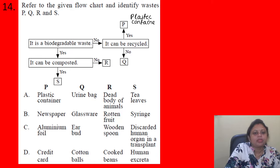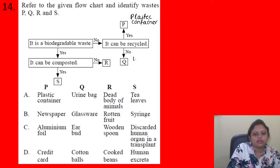P is non-biodegradable and recyclable — could be plastic container. Q is non-biodegradable and non-recyclable — could be urine bag.